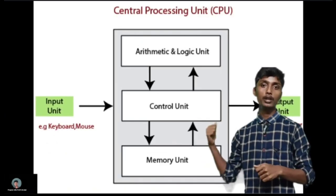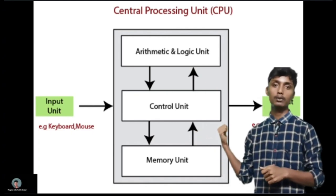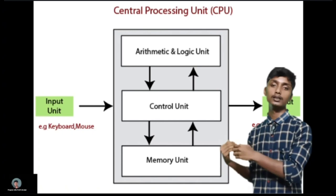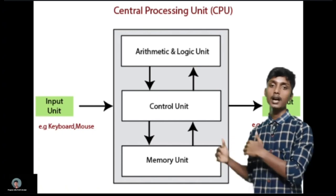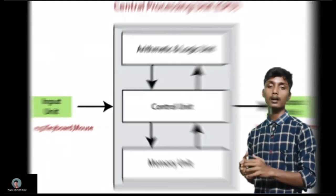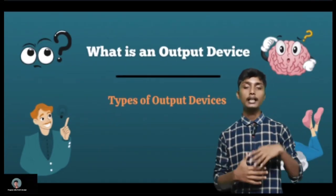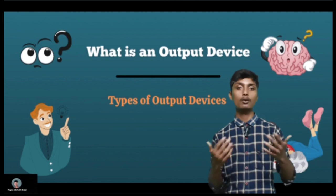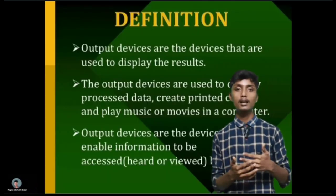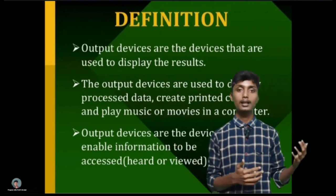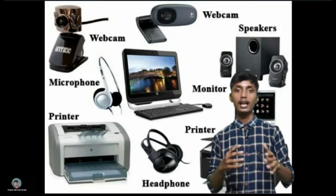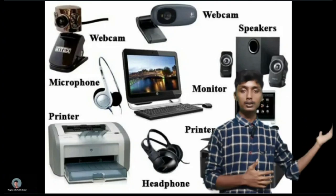We supply data from the input device, then the control unit manages the data, followed by memory storage, and finally we get the output. The output device is used to display the results on the screen. Output devices include speakers, monitors, and CDs.